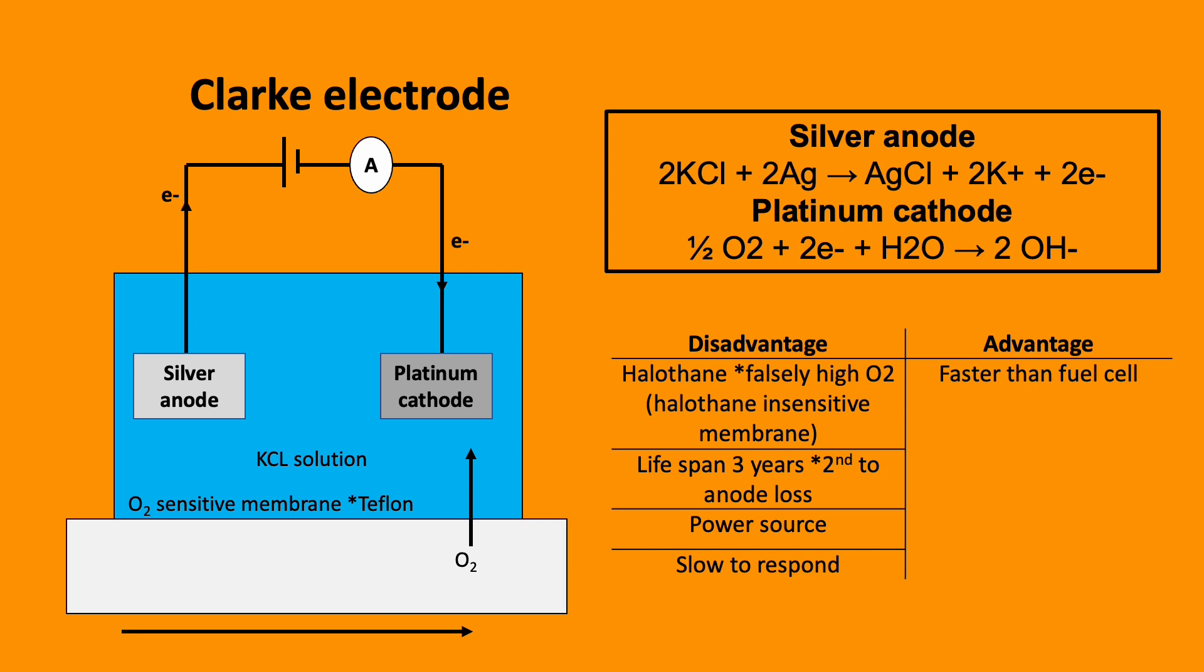Conversely, at the cathode, the platinum electrode acts as a catalyst reducing the dissolved oxygen in the sample. The oxygen diffuses via the O2-sensitive membrane into the potassium chloride solution and combines at the platinum cathode.